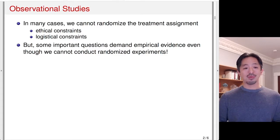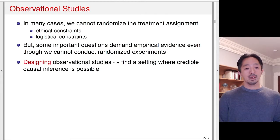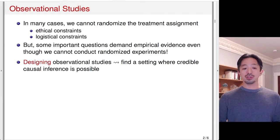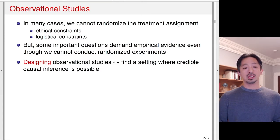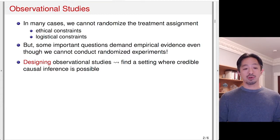We cannot just give up studying something because we cannot randomize the treatment assignment. And as we discussed, there are a lot of advantages of observational studies, in particular in terms of external validity. One thing that's important, though, is that in observational studies, because units can select themselves into treatment and control groups, it is important to think about designing observational studies so that we want to find the setting where credible causal inference is possible.